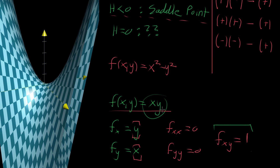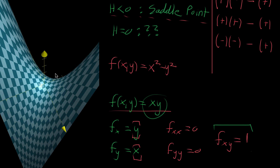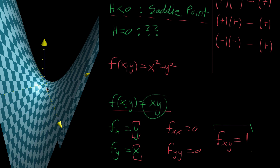So the mixed partial derivative term captures disagreement in the diagonal directions. Surprisingly, you only need this one mixed partial derivative — along with the two pure second partial derivatives with respect to x and y — to account for possible disagreement in infinitely many directions. Looking at only three terms to capture disagreement in infinitely many directions is quite the surprise.